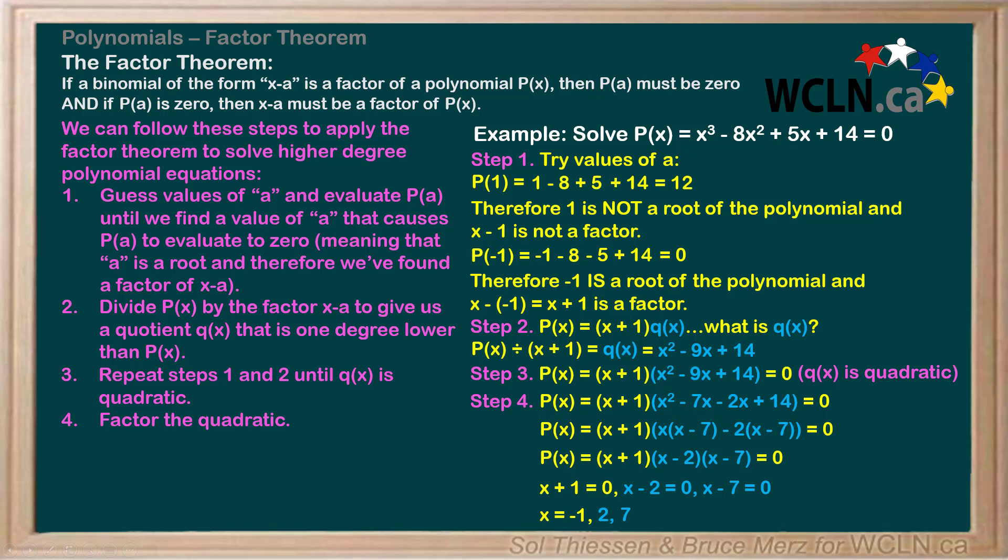In the last video, we ended with this slide. We saw a step-by-step process we could use to apply the factor theorem to factor polynomials. Our first step was to try values of a until we find a root, and therefore a factor of x minus a. Recall in the example in the last video, we started by guessing values that are easy to check, and got lucky with negative 1.